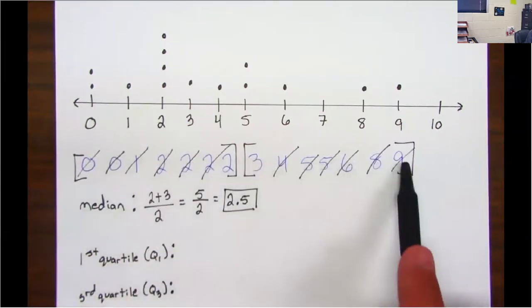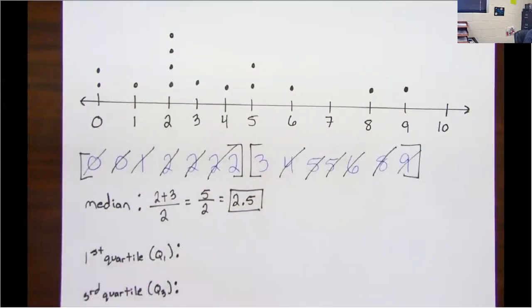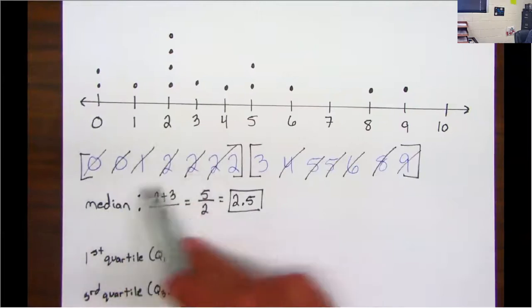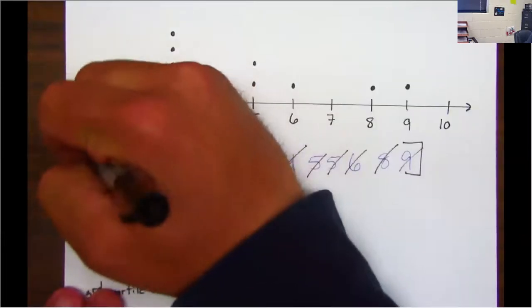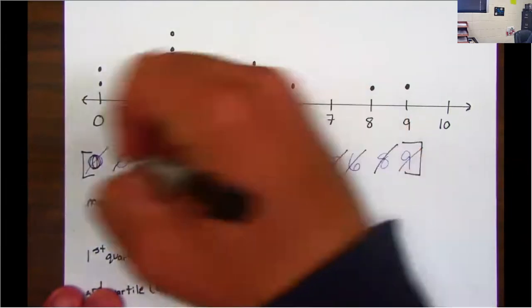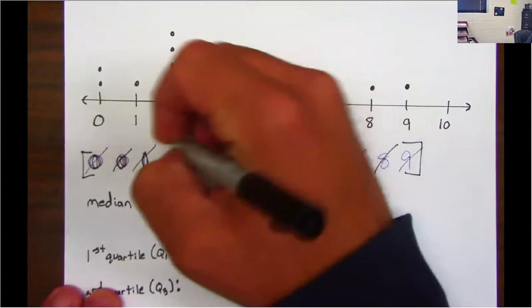Now to find the first quartile, it is the middle of this first half of the data. So cross one off the front, one off the back, one off the front, one off the back, one off the front, one off the back.